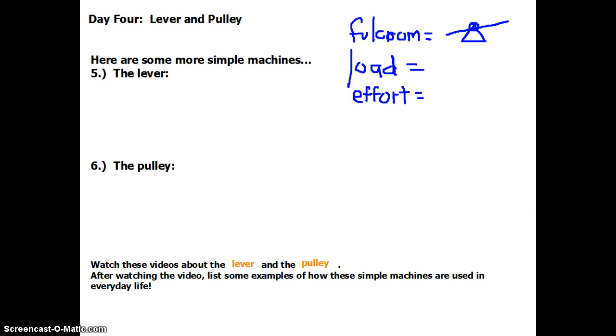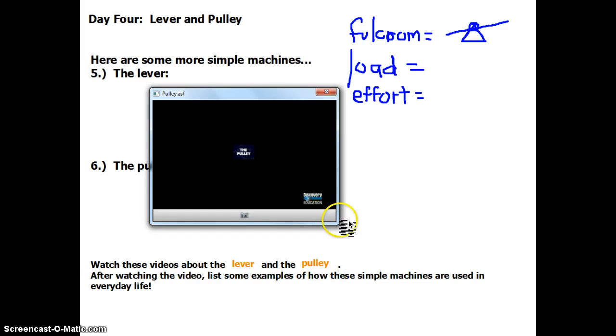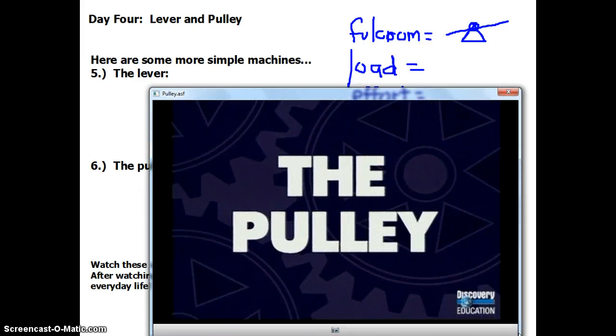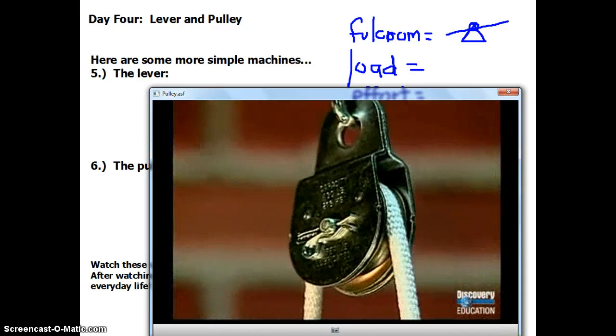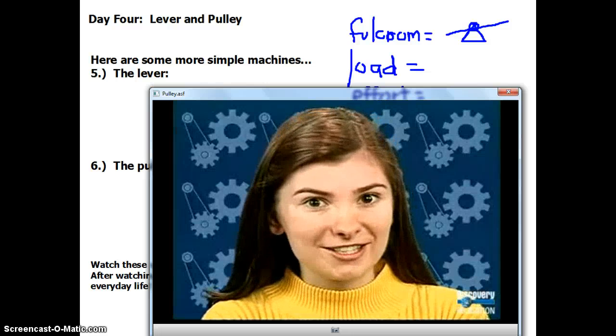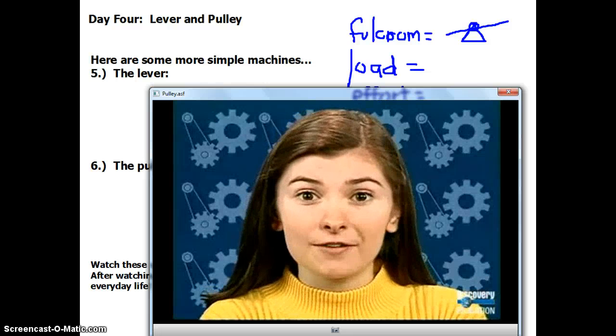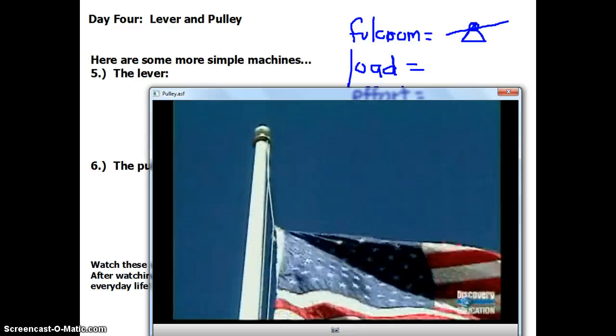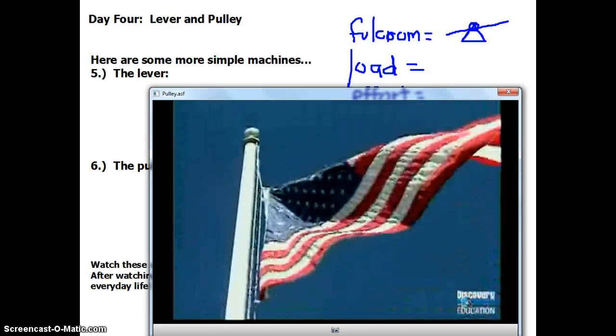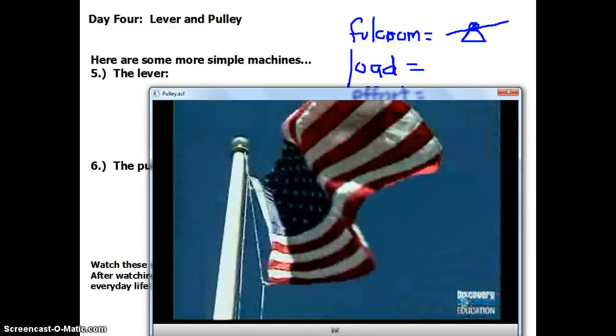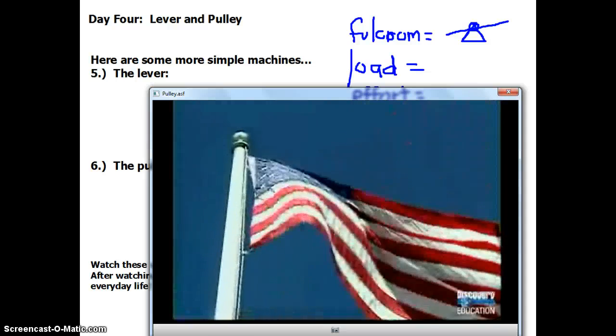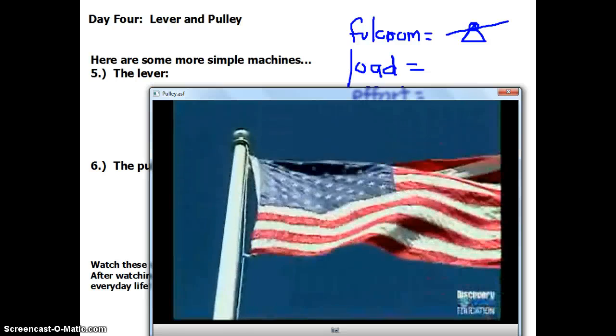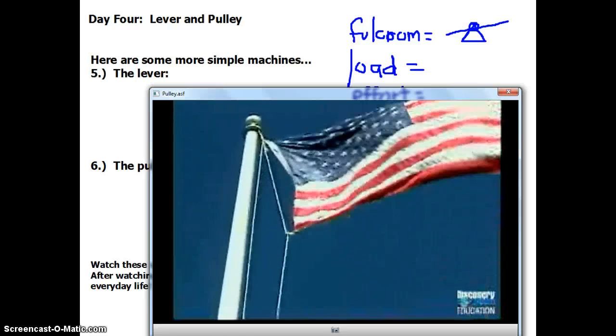Okay, so now we're going to get into the pulley, and that's our next, our last simple machine. A pulley is a simple machine that is made up of a wheel on a post with a rope or cable around the wheel. Pulleys can make work easier to do by changing the direction of a force. For example, a pulley is used to raise a flag on a flagpole or to lift heavy objects. As you pull down, you change the direction of the force that brings the flag up. That makes the work easier. This type of pulley is called a fixed pulley.